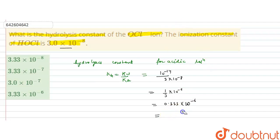If we multiply and divide by 10, so this will be equal to 3.33 into 10 raised to the power minus 7. So this is the hydrolysis constant for the OCl negative ion.